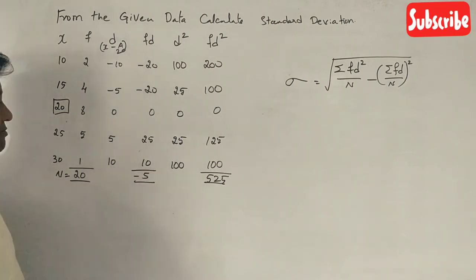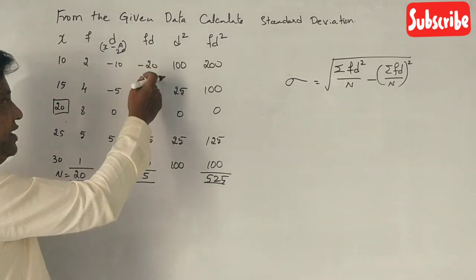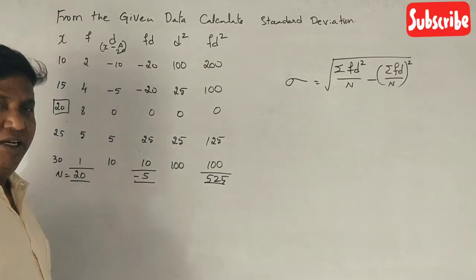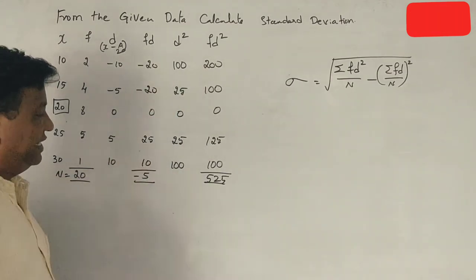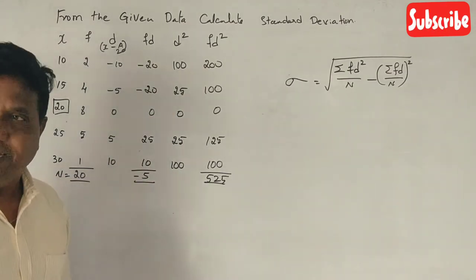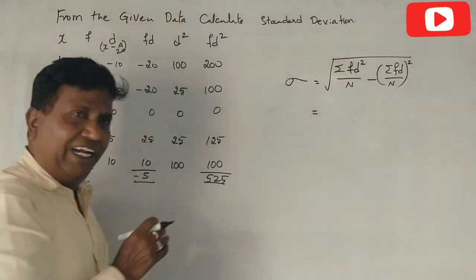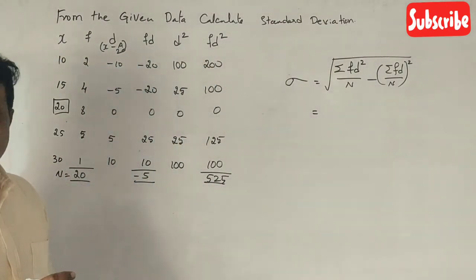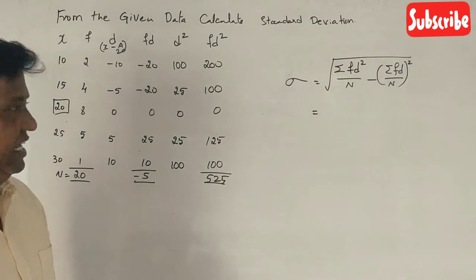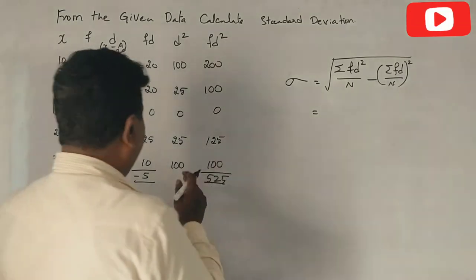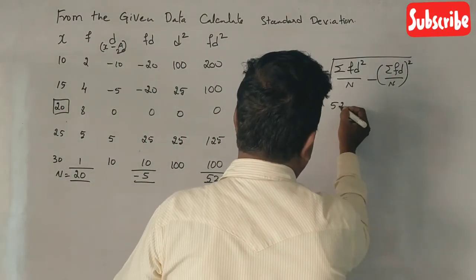The fd total: 40 minus 35 equals 5, so Σfd equals minus 5. Correct? And Σfd squared is equal to 525. n equals 20.